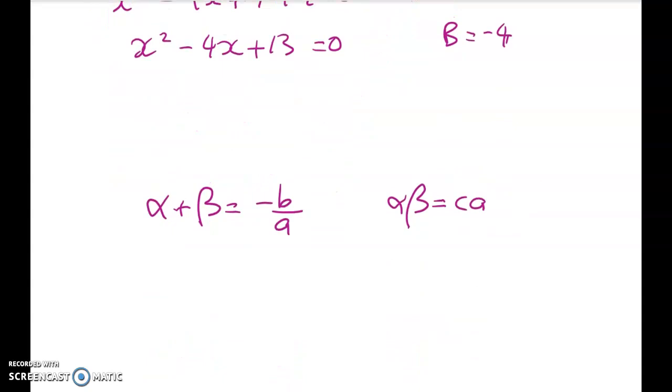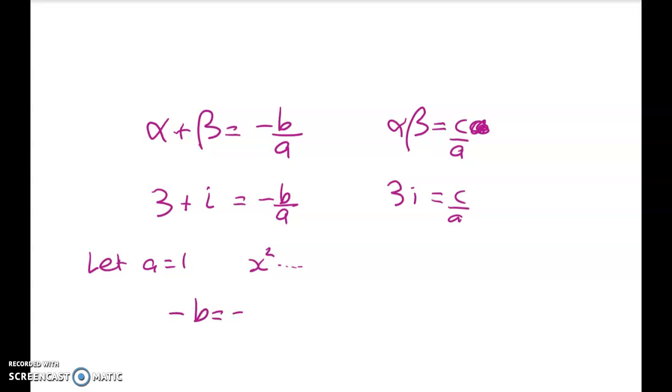But the easiest one to do here is to say that we know that the roots are equal to 3 + i. So 3 + i = -b/a and 3i = c/a. That's a mistake there, sorry. That should be c/a. We're going to let a = 1 so that my quadratic is an x² quadratic. And that means that -b = 3 + i and c = 3i.